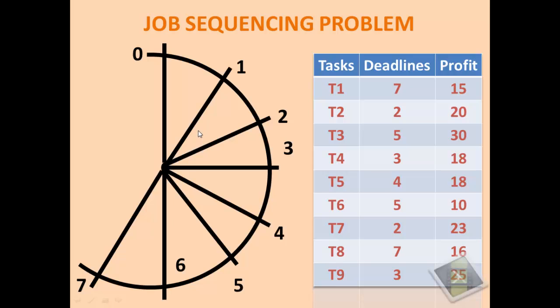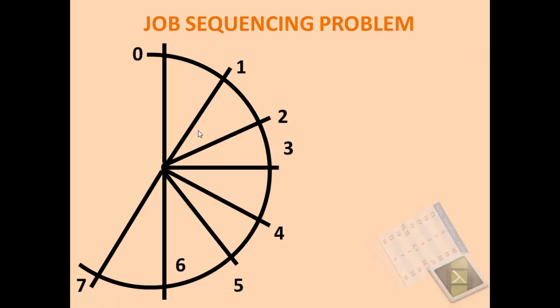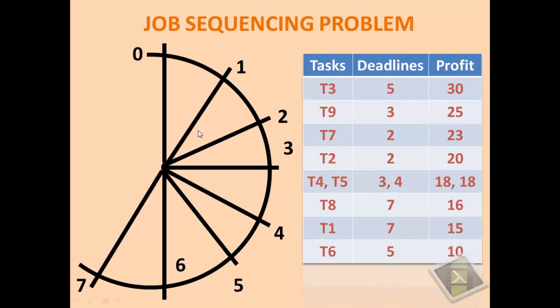Starting with the first step of the algorithm, we have to arrange the given tasks in increasing order of their respective profits. On arranging all the tasks based on the profit earned, we have the given table as shown here. Here you can see that T3 has been allocated the first position because it is having the maximum profit as 30. Here T4 and T5 are at the same level because both are having the same profit.